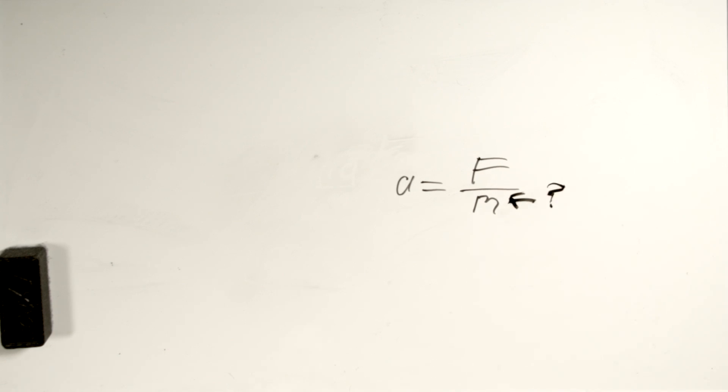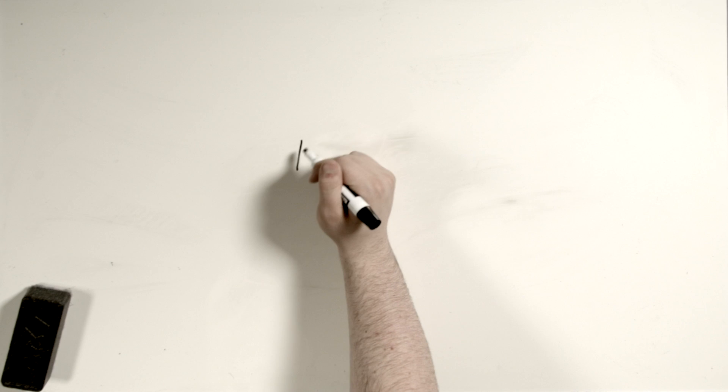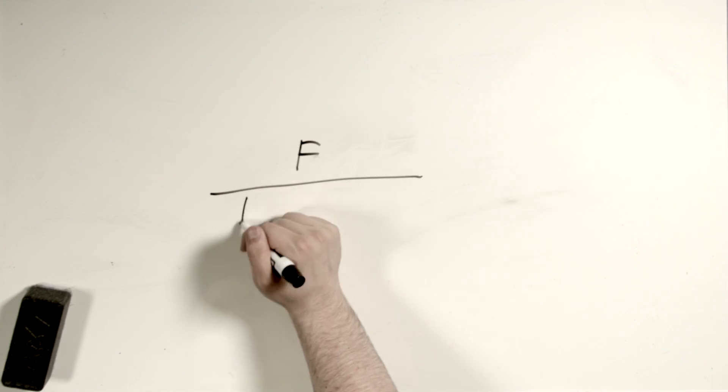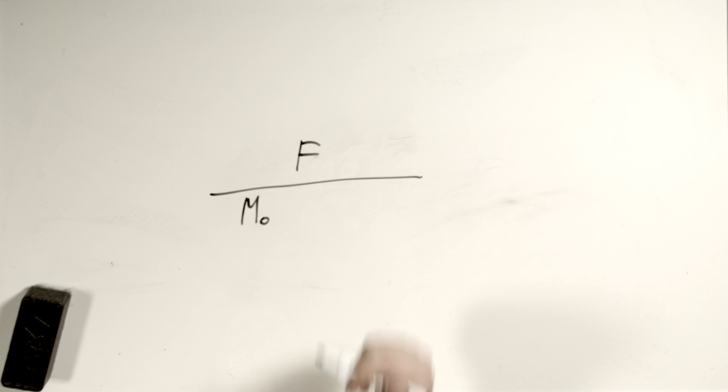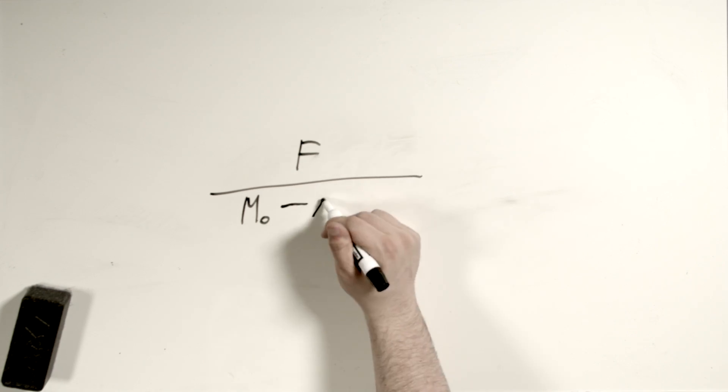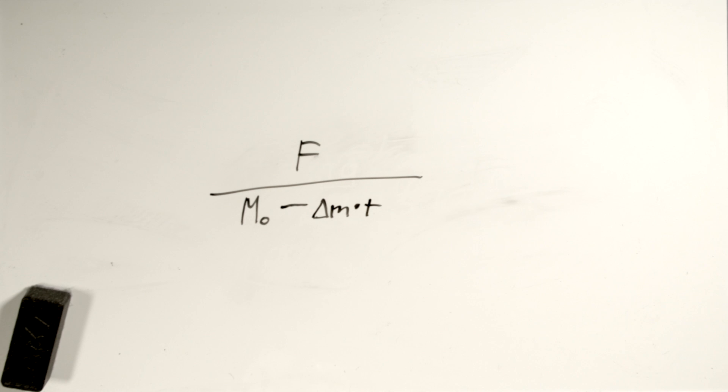That's going to give us what our acceleration is at any particular point in time, provided that we know what this mass is. Which, of course, we don't necessarily. So let me go ahead and write this in a slightly different way. So I'm going to go ahead and say f over m zero, which is going to be our starting mass before we completed any of the burns, and then we're going to subtract delta m, so our change in mass over time, and multiply that by time. That makes sense, right? So our change in mass is kilograms per second, we multiply that by a number of seconds, and we'll subtract that from what our starting mass was.